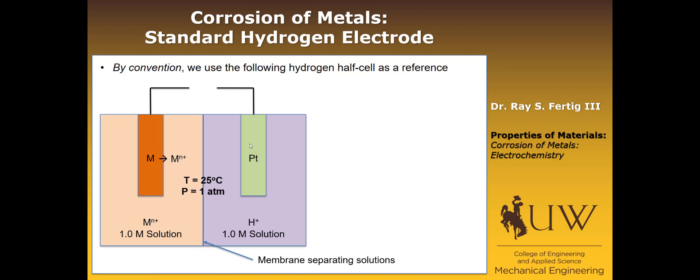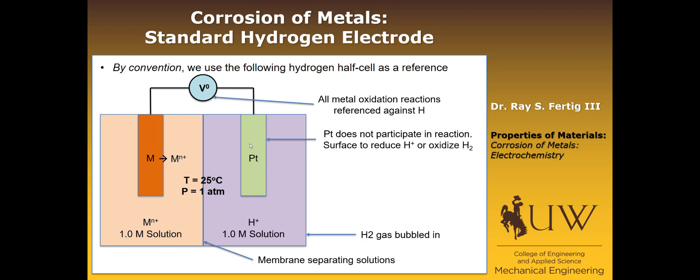The temperature that this occurs at is set at 25 degrees C at a pressure of one atmosphere, so we're controlling the environment very carefully. We're going to bubble hydrogen gas into the system to maintain that one molar solution concentration. The platinum doesn't actually participate in the reaction. It only acts as a surface to either reduce the hydrogen atoms or oxidize the hydrogen gas. So every metal or metal alloy that we put in on the left side, we're going to evaluate the voltage that represents a potential across this couple. All metal oxidation reactions are going to be referenced against this hydrogen half cell. We call this complete structure the standard hydrogen electrode.